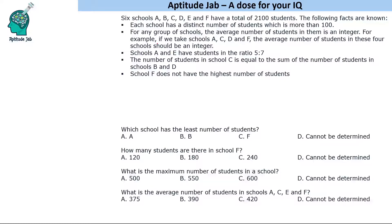The second condition says: for any group of schools, the average number of students in them is an integer. This is a very important point — if you understand this, you can solve the question. For example, if we take schools A, C, D, F, the average number of students should be an integer. Similarly, if we take five schools A, B, C, D, E, their average should be an integer — let us say that integer is k.